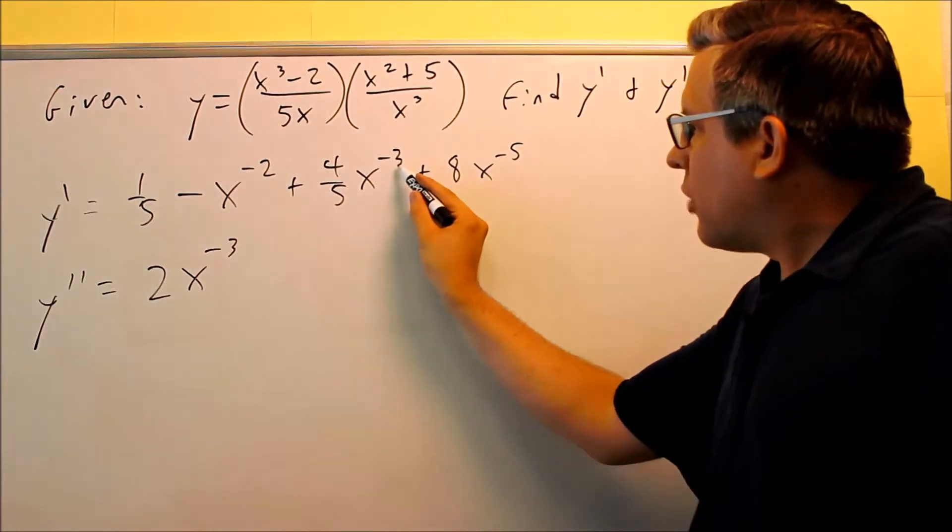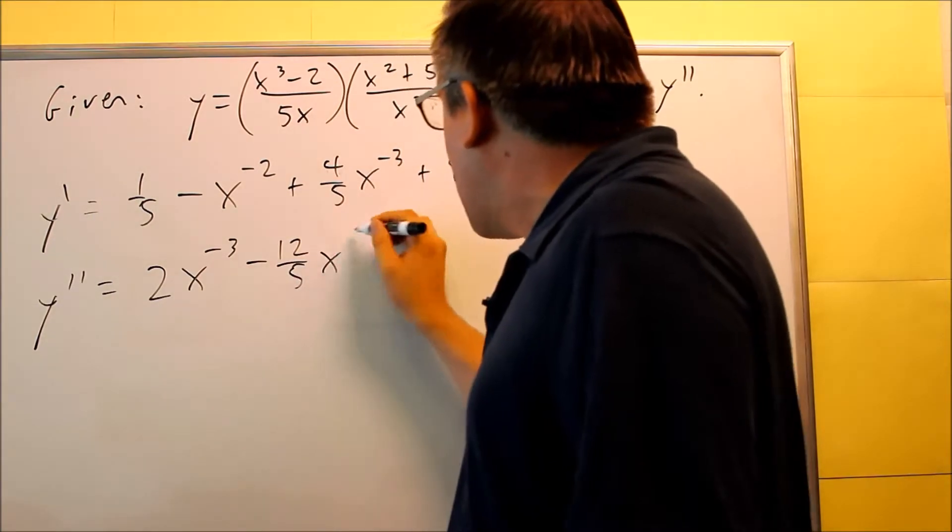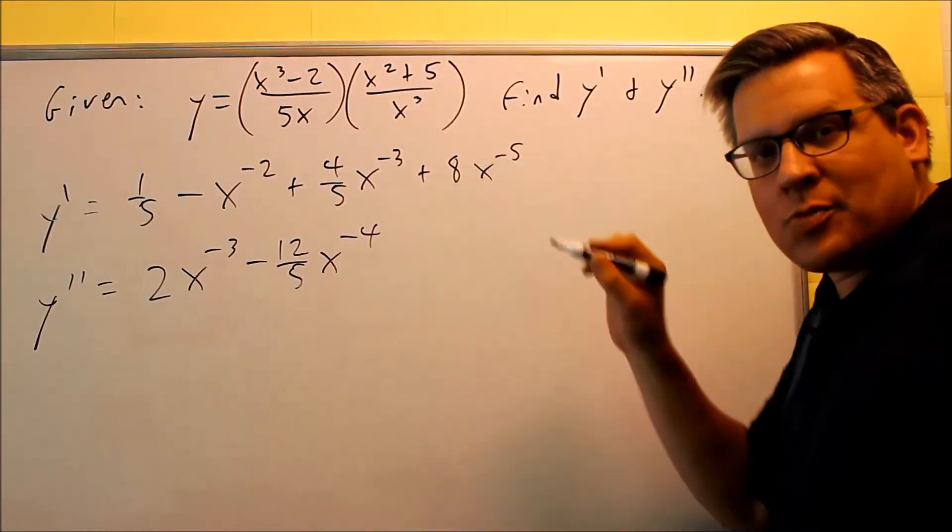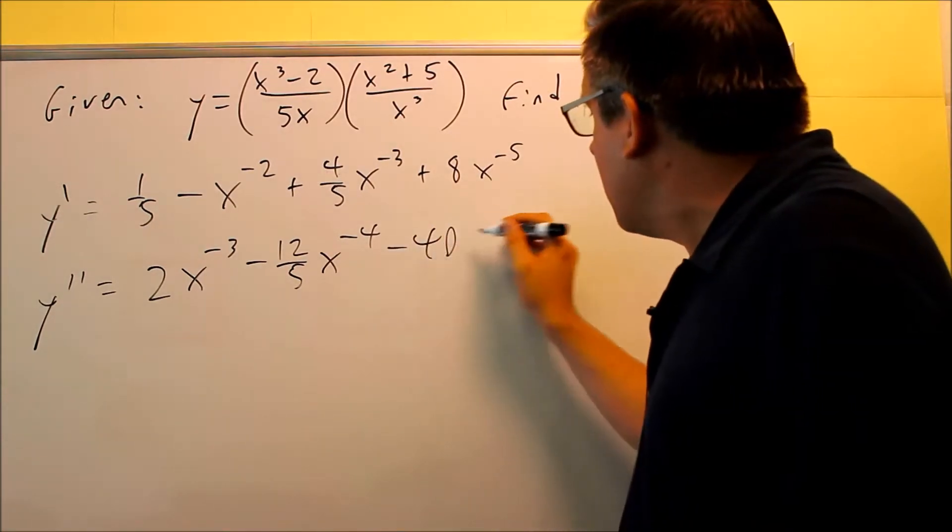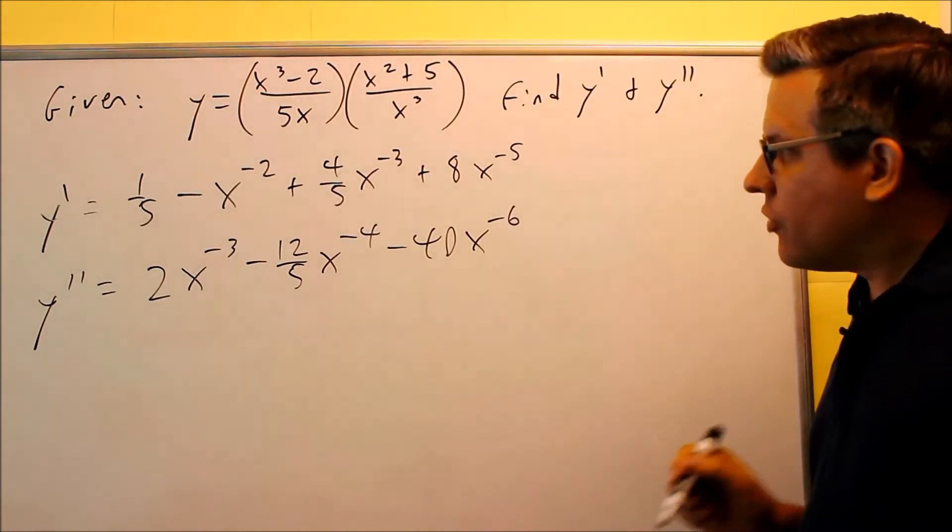This one, you're multiplying negative 3 times the four fifths, that's negative 12 fifths x to the negative 4. This one, negative 5 comes down, multiplied by negative 8, negative 40x to the negative 6. So now we've done first and second derivative.